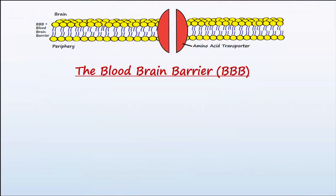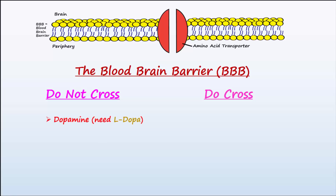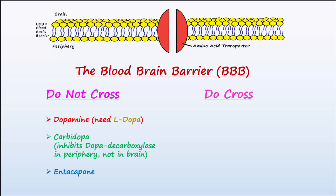Let's review the molecules that do not cross and the molecules that do cross the blood-brain barrier. Molecules that do not cross include dopamine — hence we need L-DOPA to enter the brain — and carbidopa, which will inhibit dopa decarboxylase in the periphery and not in the brain. Entacapone is also a COMT inhibitor that does not cross. As for molecules that do cross, that would include L-DOPA, which is favorable because once L-DOPA is in the brain, it is converted to dopamine, which is desired because this will treat the low levels observed in Parkinson's disease.